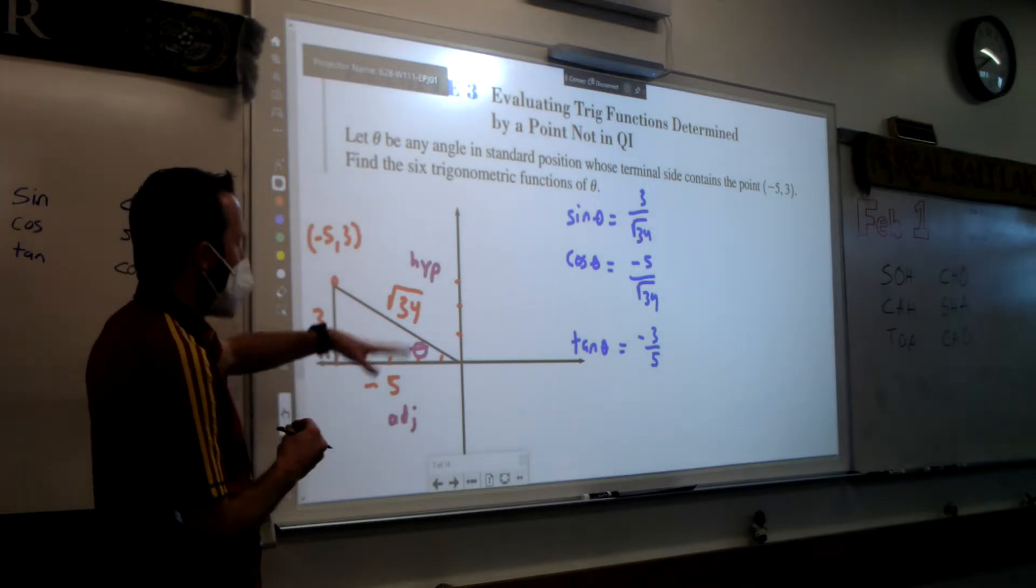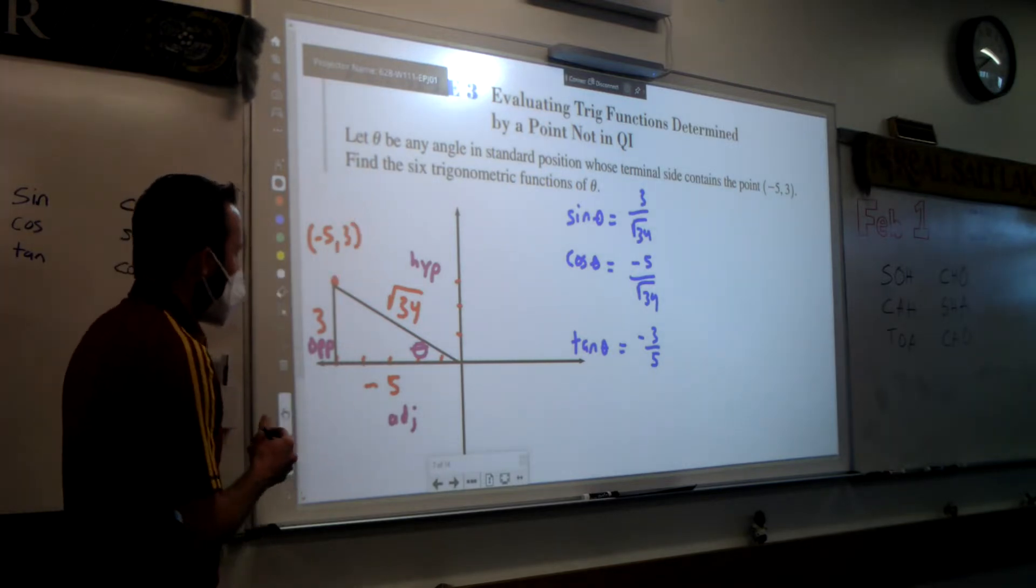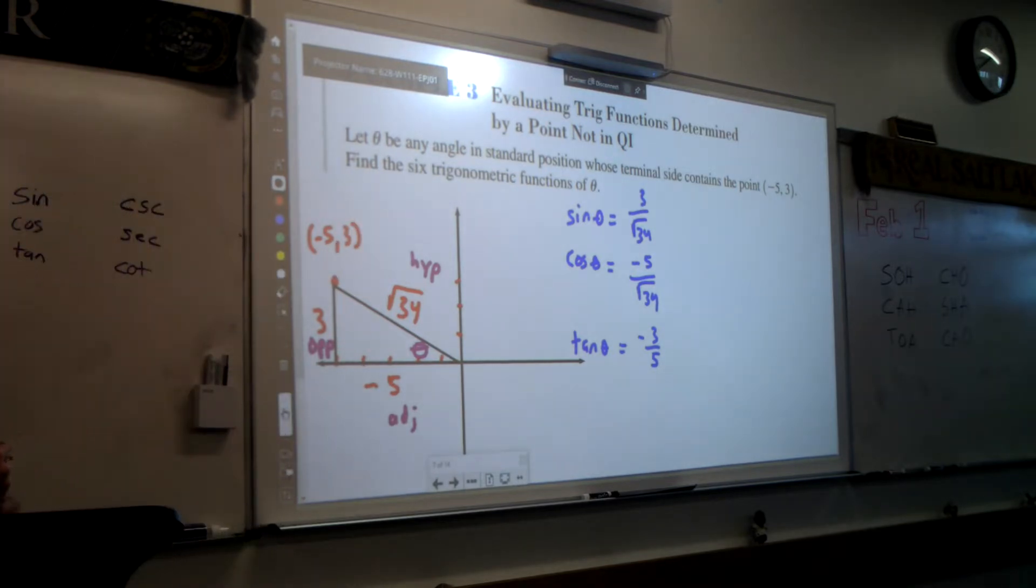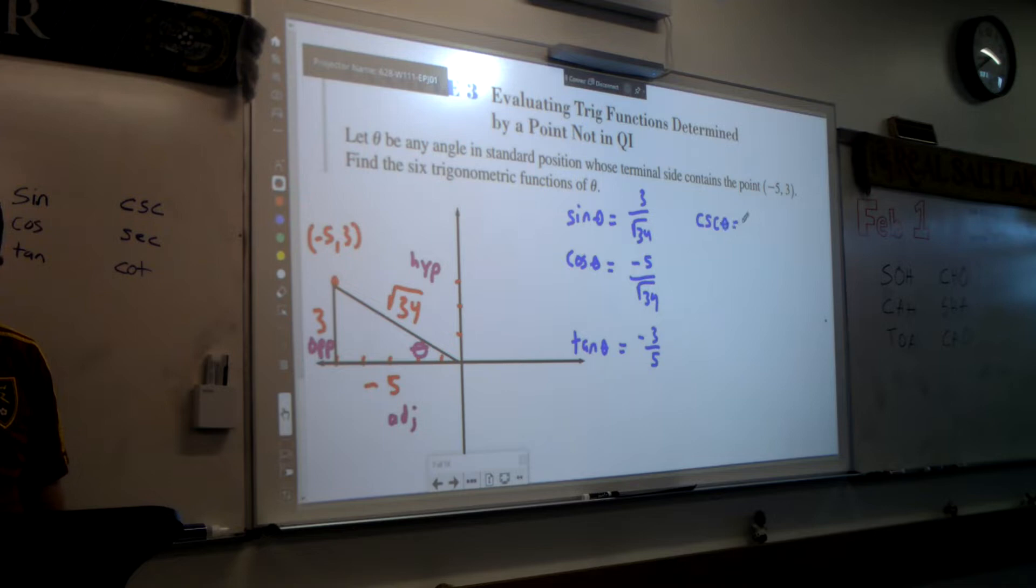Now, does it matter if the negative goes on bottom or top or out front? I just usually put it in top just to avoid confusion. But it's the same really. Okay, let's keep going with cosecant. We're just going to flip that over, so that's square root of 34 over 3. Secant, we're going to flip the cosine over, so that's a negative square root of 34 over 5. And lastly with the cotangent, that will just turn into negative 5 thirds.